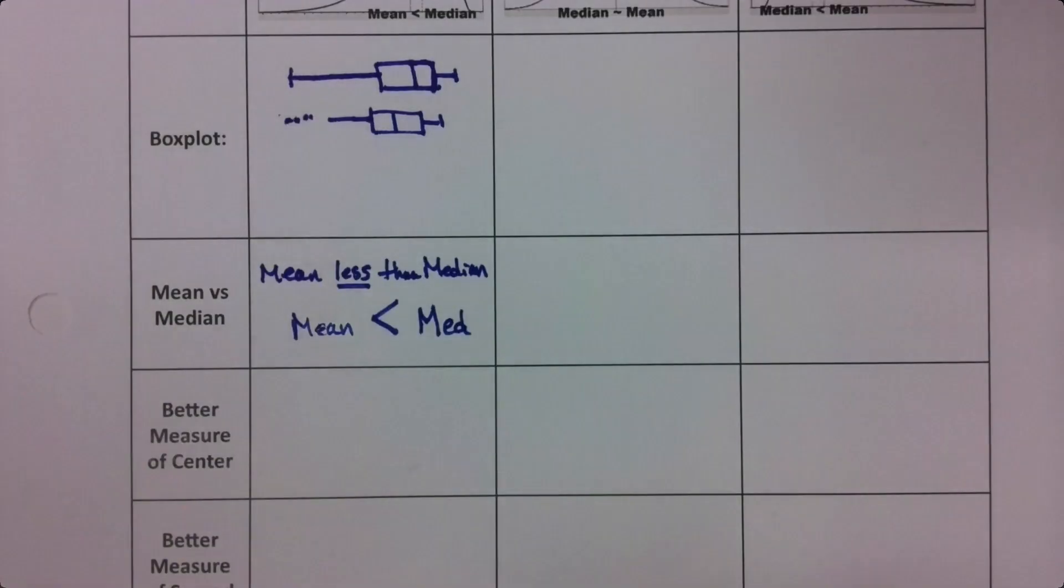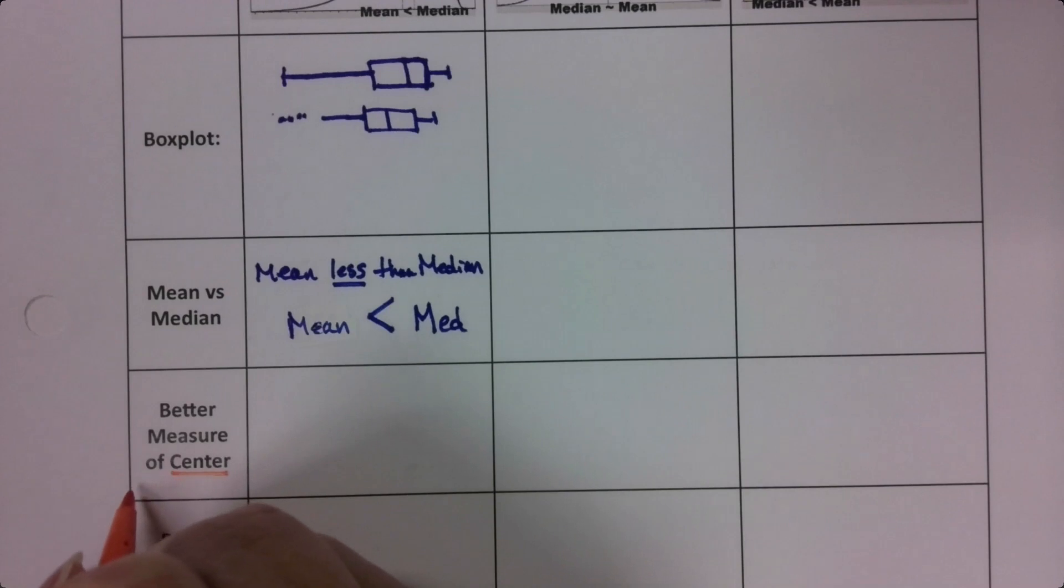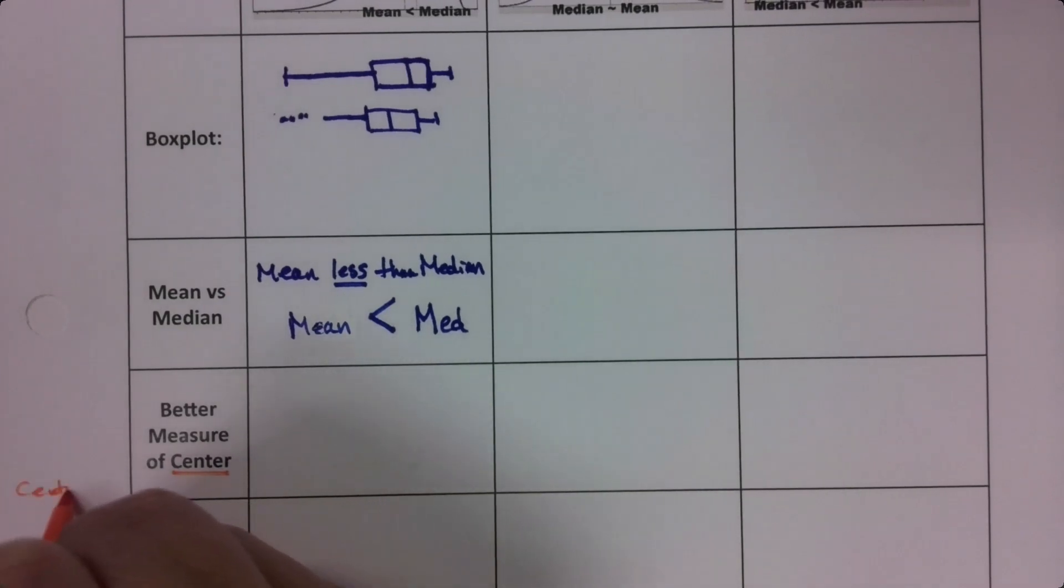Central tendency. Average. Center is central tendency, which is average. It's all the same thing.